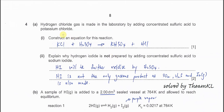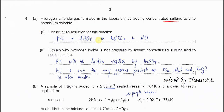Question 4. Hydrogen chloride gas is made by adding concentrated H₂SO₄ to KCl. Construct an equation for this reaction. It's very easy: KCl with H₂SO₄ forms KHSO₄ plus HCl.